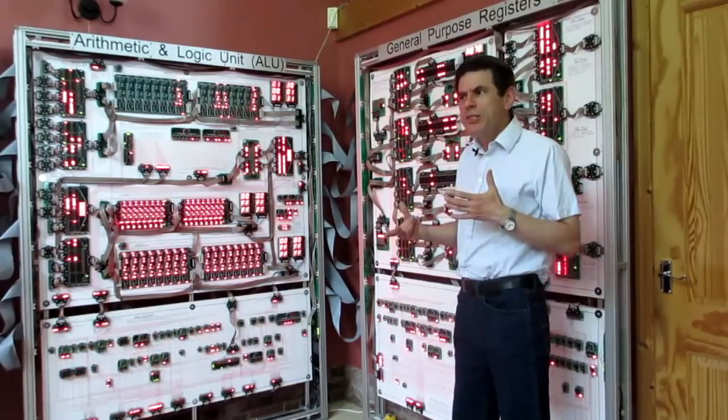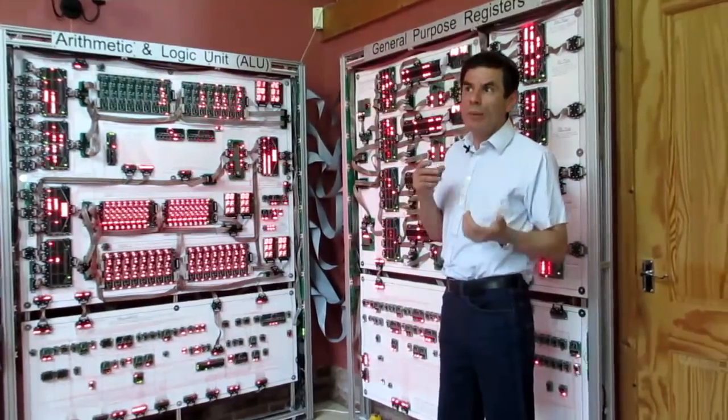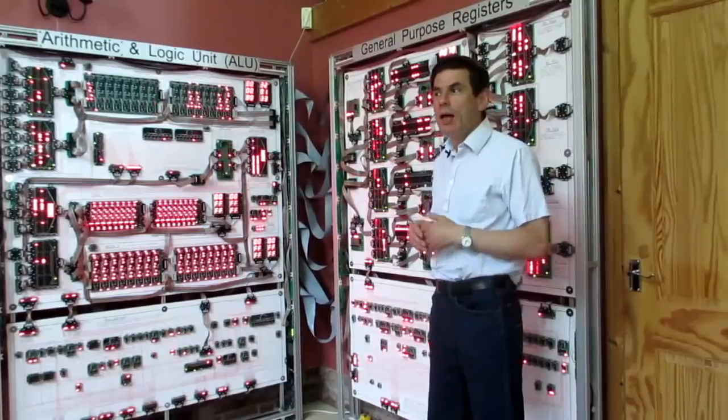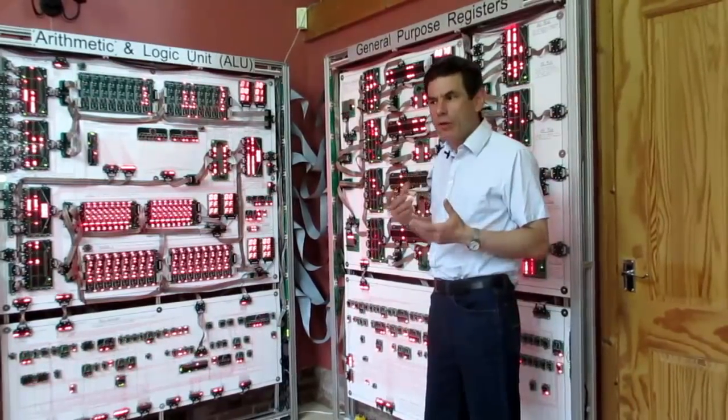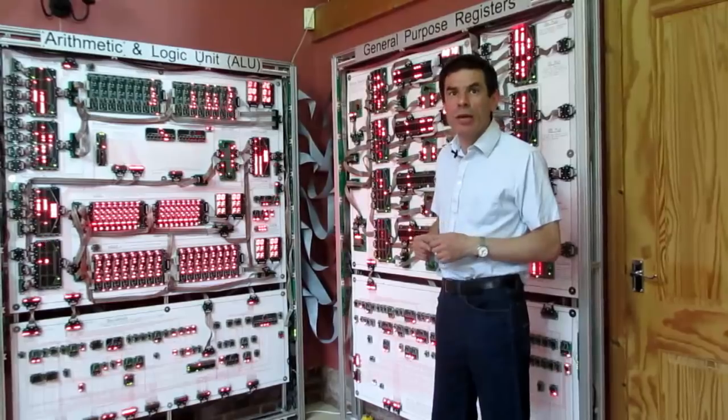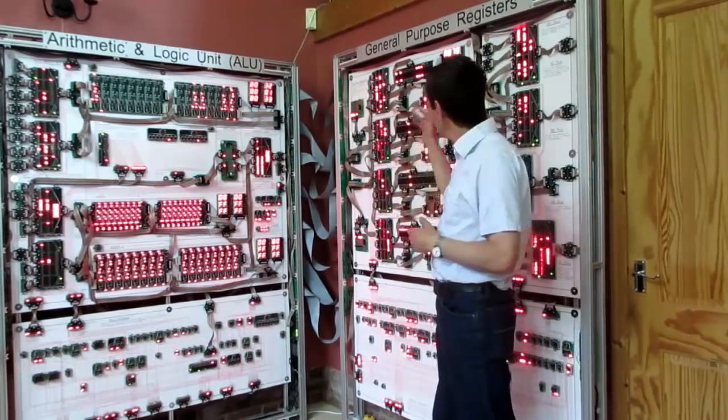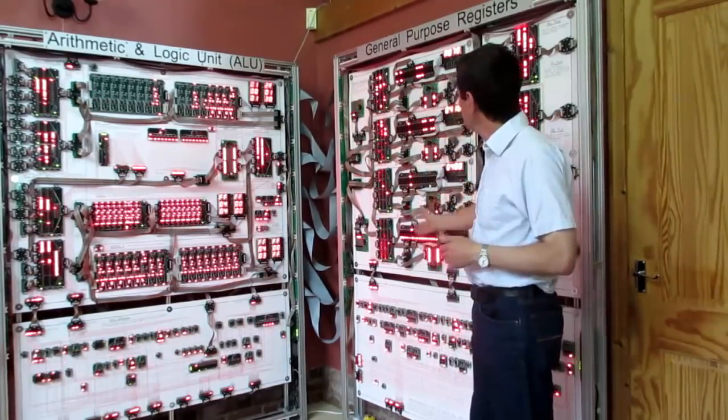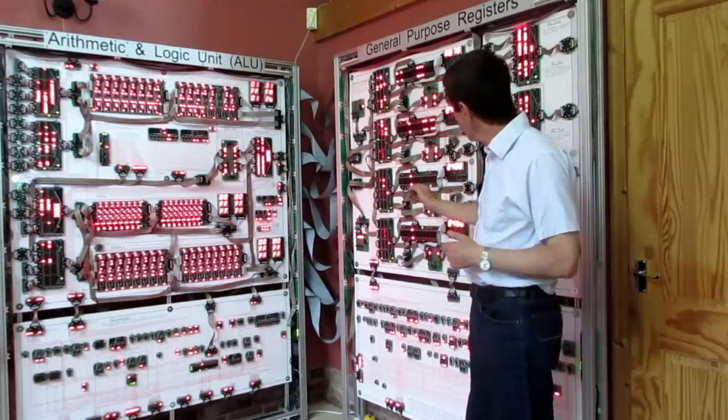So in a processor there are several functional blocks. One example is the registers, which are a scratch pad for carrying out calculations. So these are the registers for the megaprocessor. We've got four of them here.